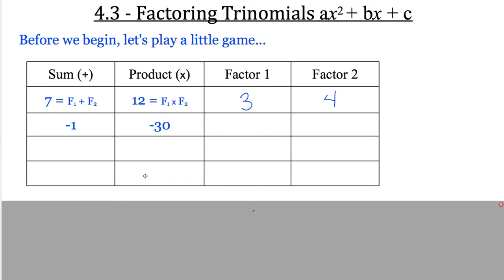Let's try it again. I'm looking for two numbers that add to negative 1, but they multiply to negative 30. We have to find numbers that multiply to make negative 30. 1 times 30, 3 times 10, 15 and 2 — none of those are going to add up to 1. What two numbers that multiply to make 30 are 1 away from each other? The answer is 5 and 6. 5 times 6 is 30, and the difference between 5 and 6 is 1. We have to ask which one is negative — the 6 needs to be negative. So the factors are 5 and negative 6.